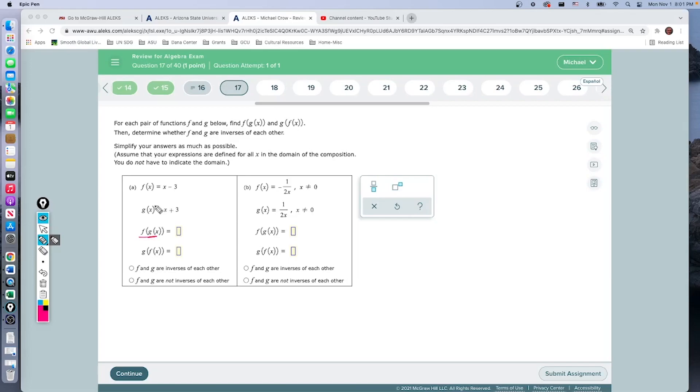For this first one, we do f composite g. F is the outside function, so f composite g of x takes the f function, x minus 3, and we rewrite it with parentheses. Inside the parentheses, we put the g function, x plus 3. Now we simplify. There's no exponent, no multiplication in front, so we remove the parentheses and get x plus 3 minus 3. Combining like terms, plus 3 and minus 3 is 0.